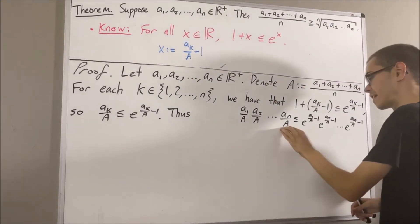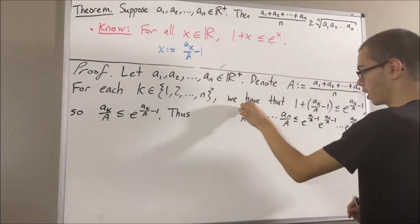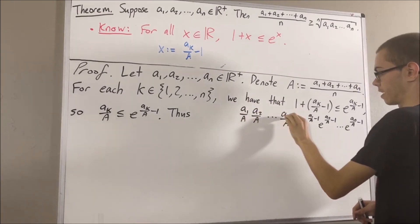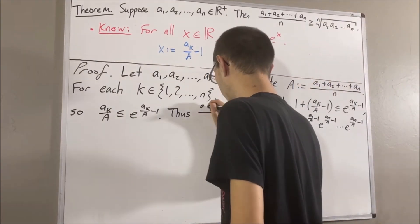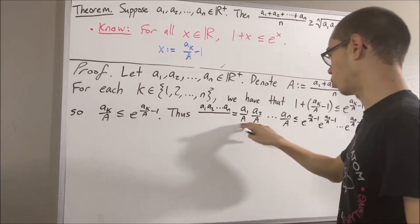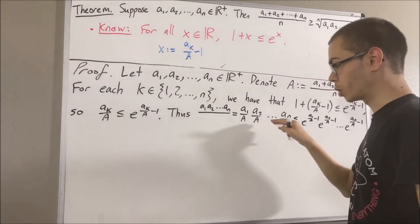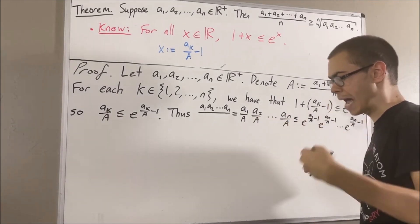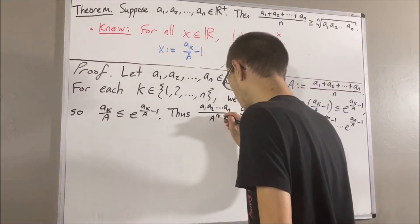Now, on the left-hand side of this inequality, if we multiply all the numerators together, we get a1 times a2 times dot dot times an. And, if we multiply all the denominators, we're really multiplying capital A n times. So, we get capital A to the power of n. And now, looking at the right-hand side of this inequality,